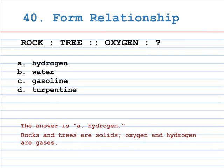A dinghy is a small open boat, and can be a rowboat or sailboat. Number 40: form relationship. Rock is to tree, as oxygen is to A. Hydrogen, B. Water, C. Gasoline, D. Turpentine. The correct answer is A, Hydrogen. Rocks and trees are solids. Oxygen and hydrogen are gases.